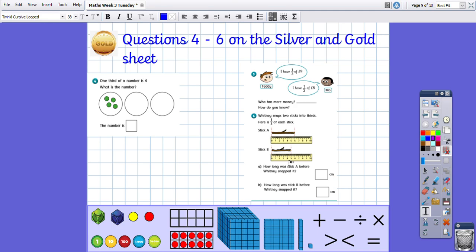Gold, you've also only got three questions today. So if you feel confident enough, I'd like you to have a go at one or two of the platinum questions, please. So question four for you. One third of a number is four. What is the number? So I would complete the image and then work it out. And then you've got Teddy and Moe who have got a third of nine pounds and half of eight pounds. Who's got more money? I'd like you to draw this out and show me how you've worked that out, please. And then Whitney snaps two sticks into thirds, but she's only showing you a third. You need to work out how long the stick was before it was snapped. So look at where it is on the ruler and work out how many pieces you would need and then add those numbers up.